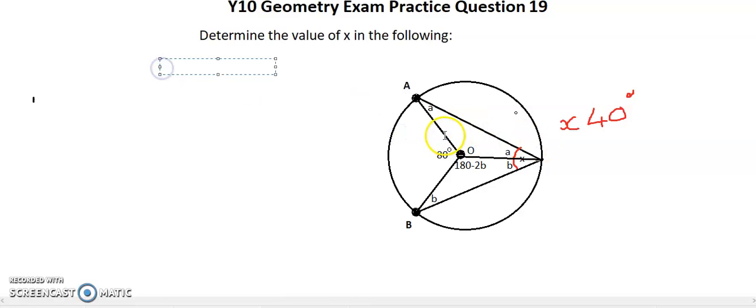Likewise, on the other triangle, I'm going to have 180, and I'm going to minus 2A.